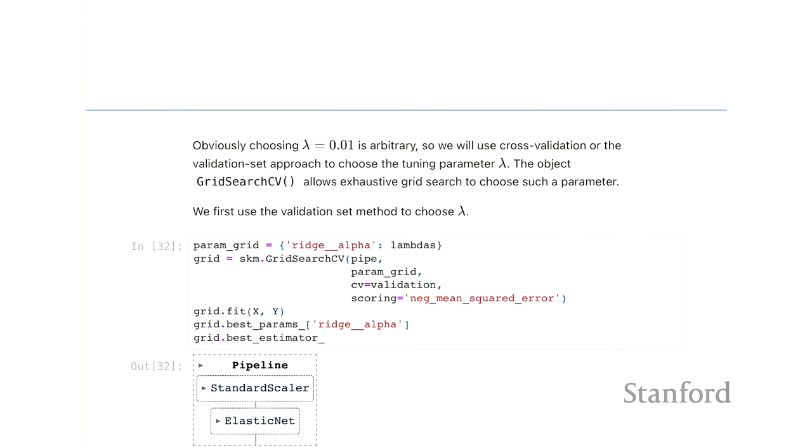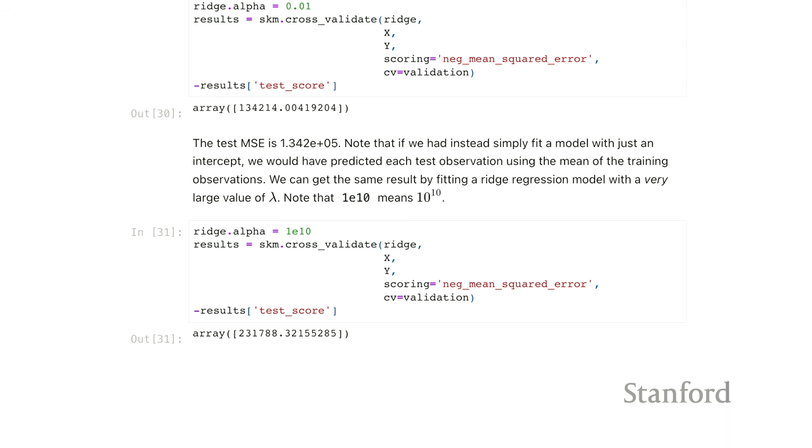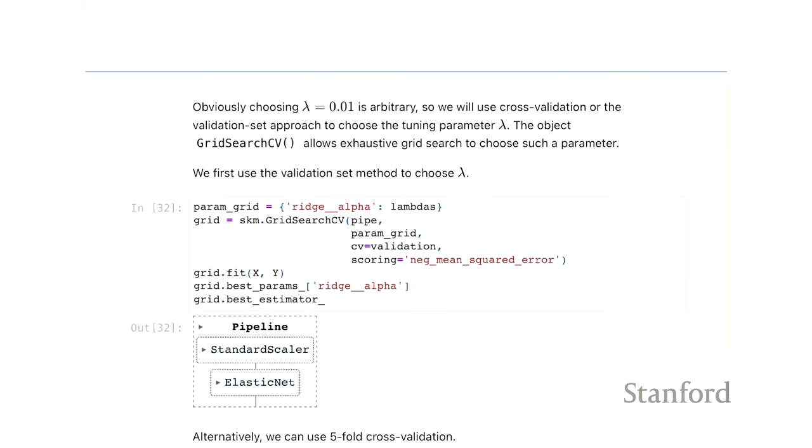And if we wanted to use cross-validation, a k-fold, of course, all we would have to do is change this argument here to be a k-fold argument instead of the test train split. So now, we'll do the same thing, but we'll, we're going to use the pipe estimator, which actually scales and standardizes each time. And we're going to, this is an example here that, where we'll see how to search over a grid of parameters. So this, this function gridSearchCV, it takes some form of cross-validation. In this case, this is this test train split we saw above.